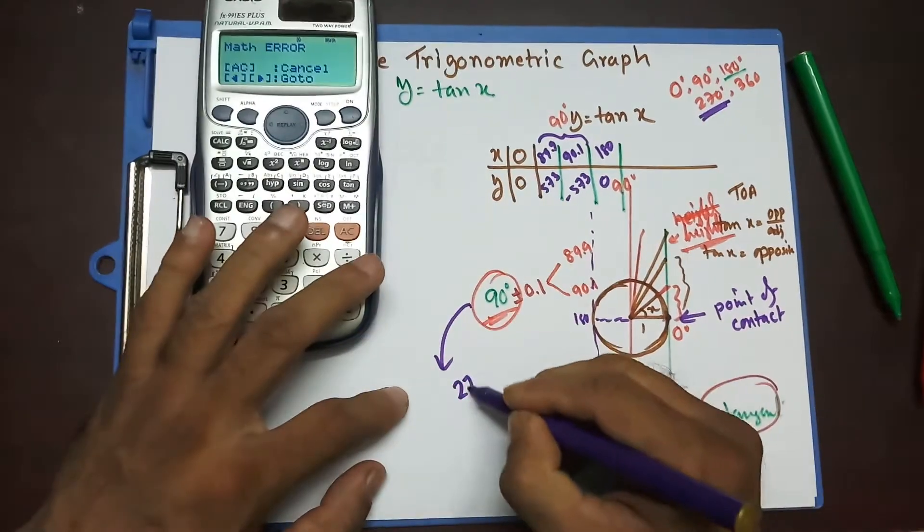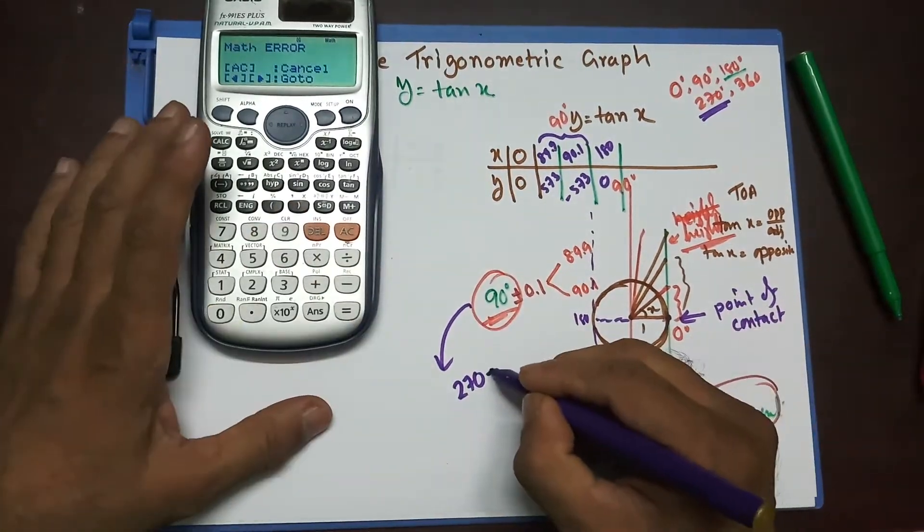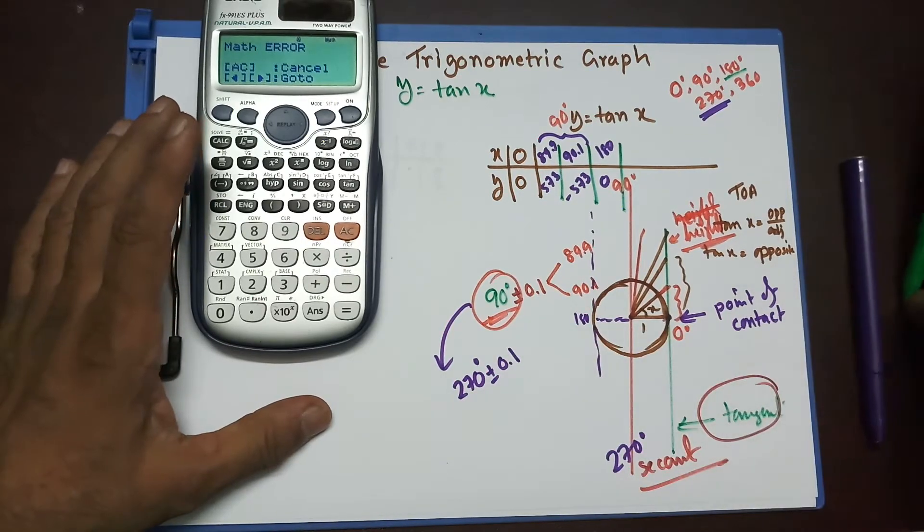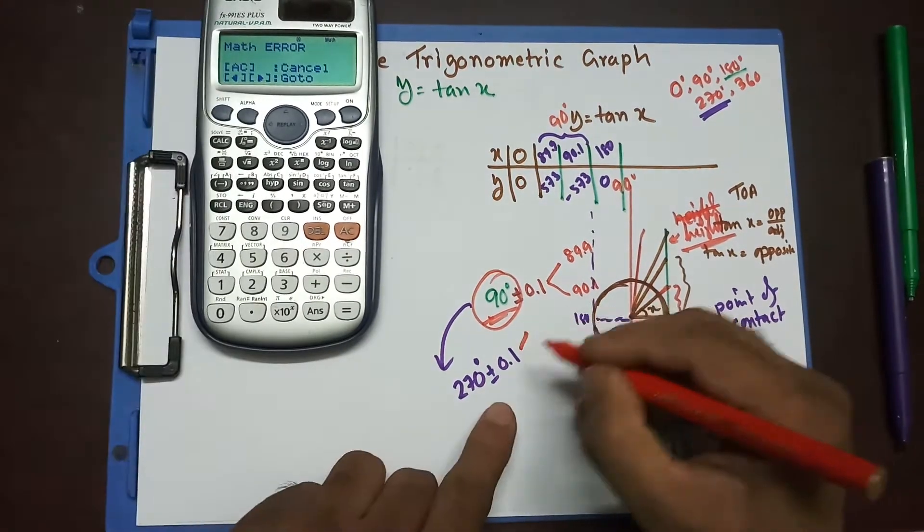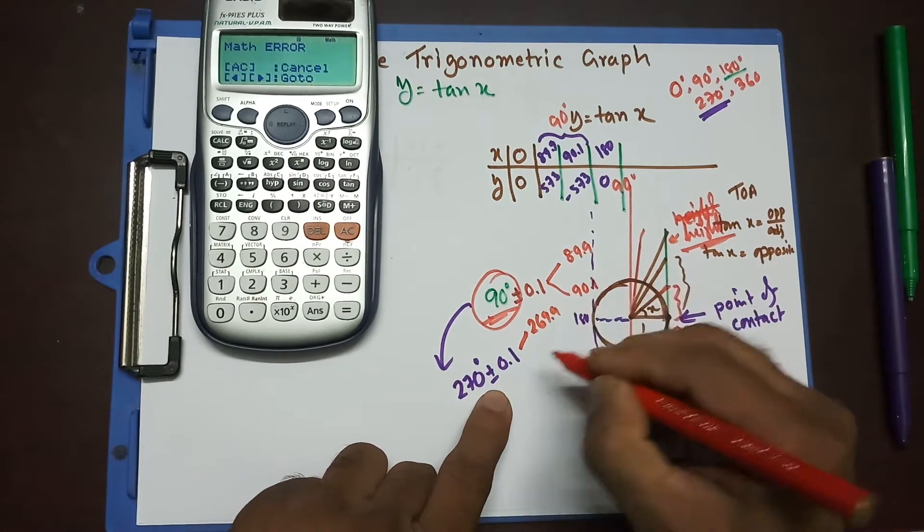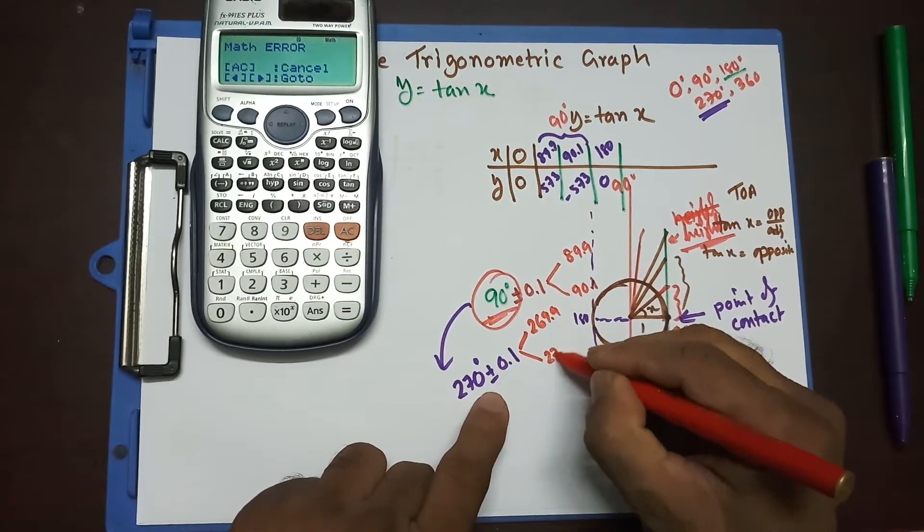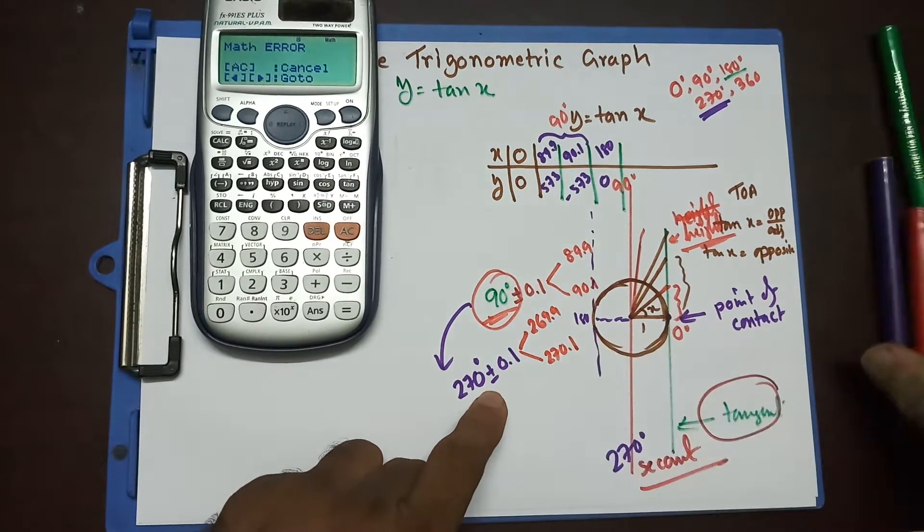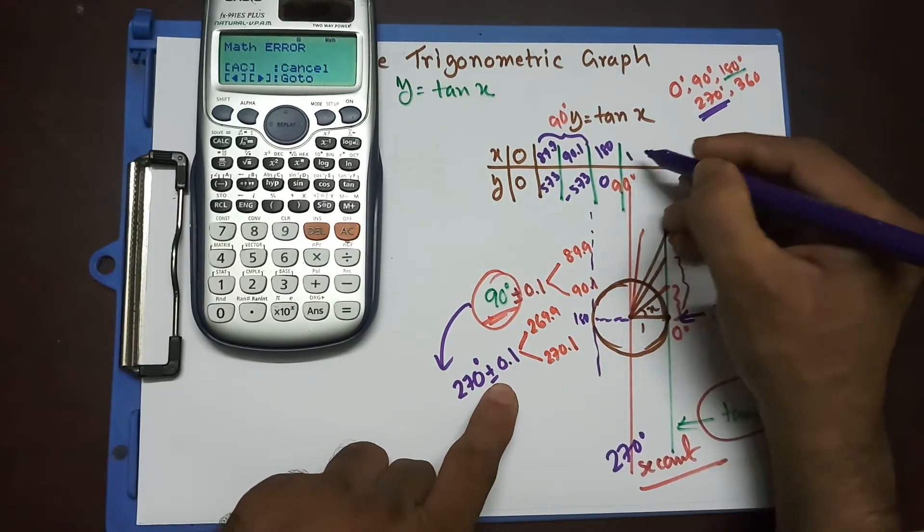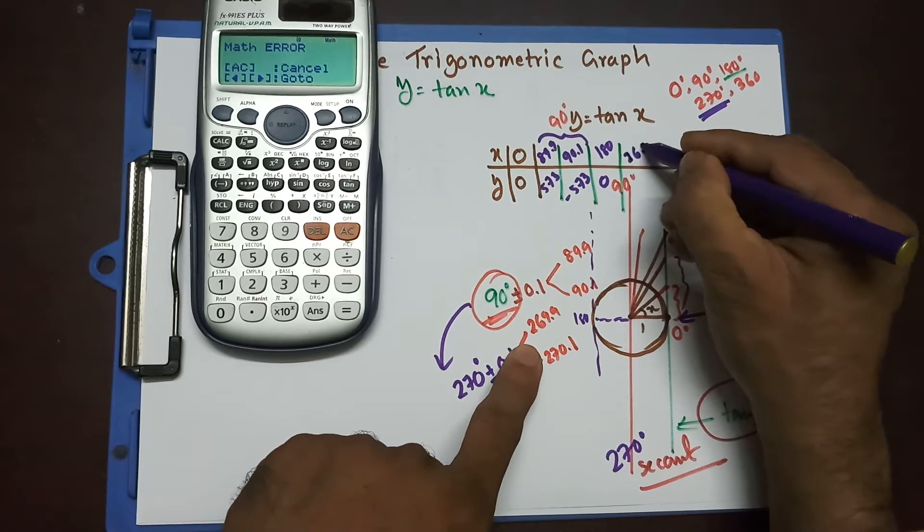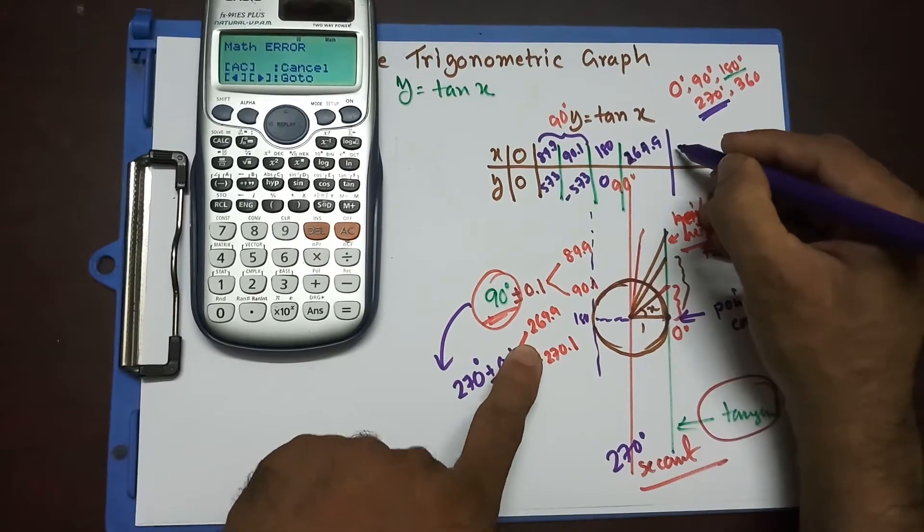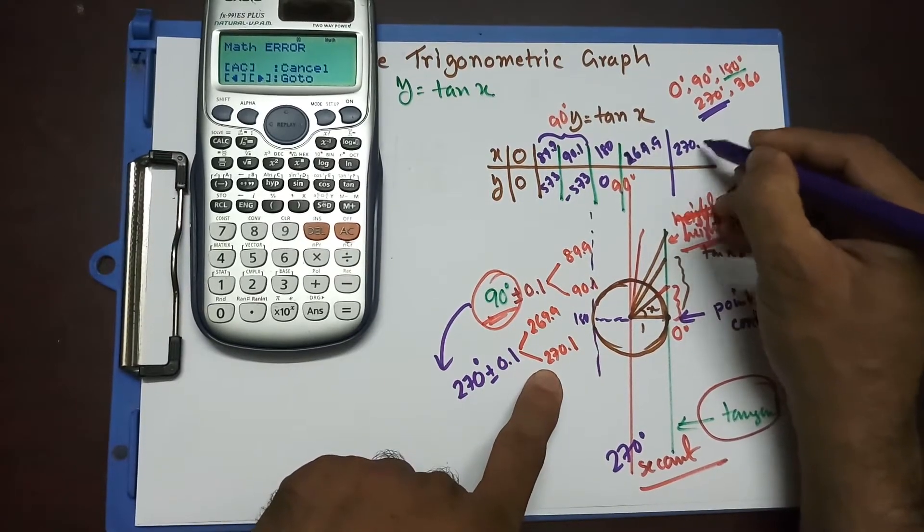So, same thing we're going to apply. 270, since it's not going to be valid, we're going to add or subtract 0.1. So, the first one, when we subtract that, it should be 269.9, and when we add it, 270.1. So, over here, I have 269.9. This is 269.9, and 270.1.